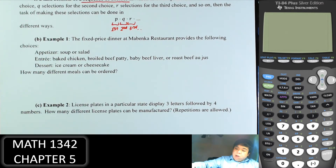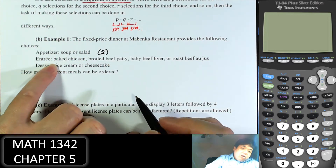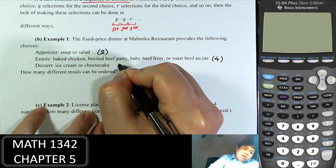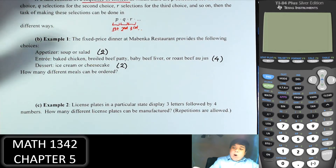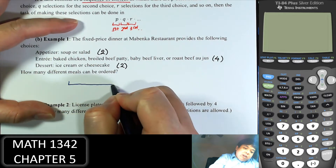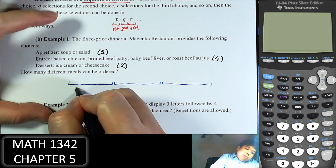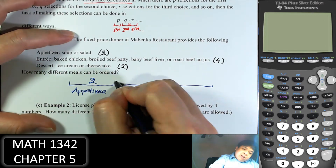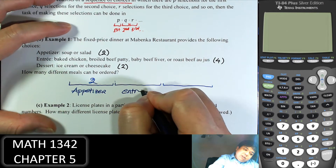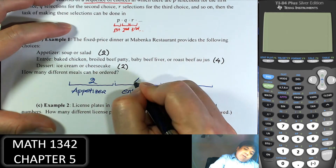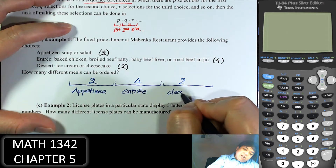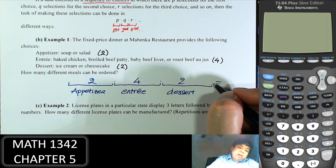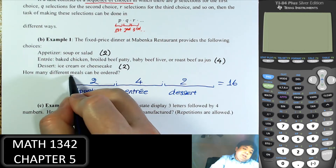There are two appetizer options, four entree options, and two dessert options. To find how many different ways we can order a meal, there are three steps: first select an appetizer — there are two; next choose an entree — there are four; and we can choose two different desserts. So multiply straight across: 2 times 4 times 2 equals 16. There are 16 different meals that can be ordered.